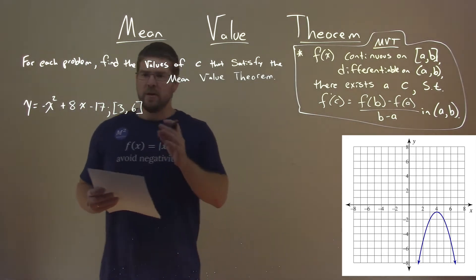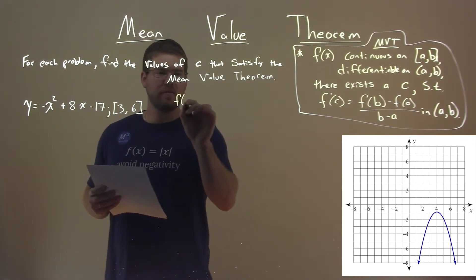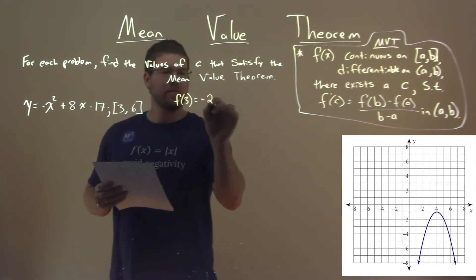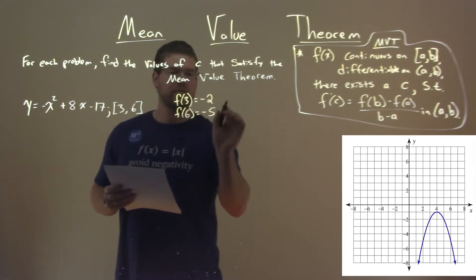First, we need to find what f of 3 and f of 6 are. So we have f of 3 is equal to negative 2 when we plug it into our equation, and f of 6 is negative 5.